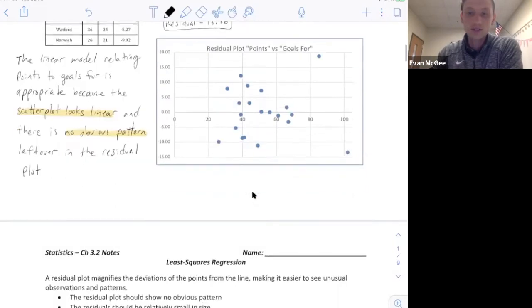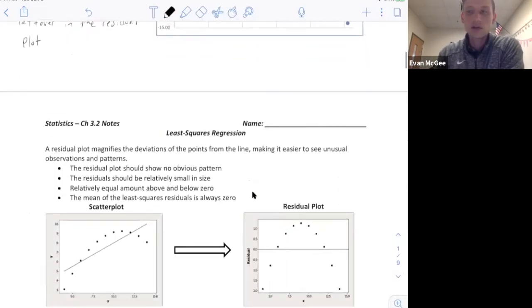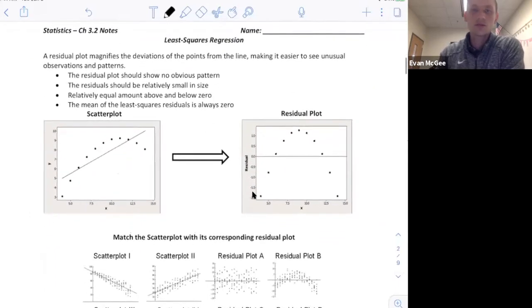Let's look at the next slide or the next page for a couple other examples here. So when we're looking at the residual plot, it's going to magnify the deviations from the points of the line. It's going to help you to see the typical residual. We want the residual plot to show no obvious pattern. We want the residuals to be relatively small in size and we want there to be the same amount above and below zero. And just a reminder that the mean of the residual plot is always going to be zero.